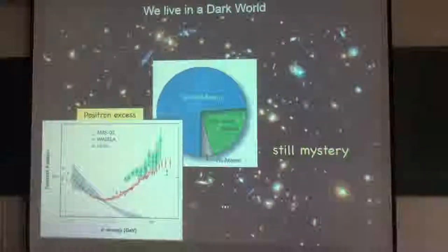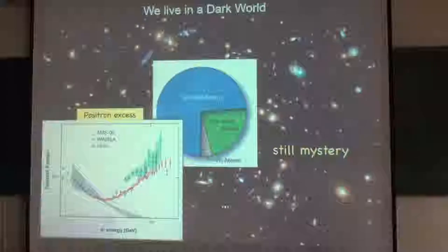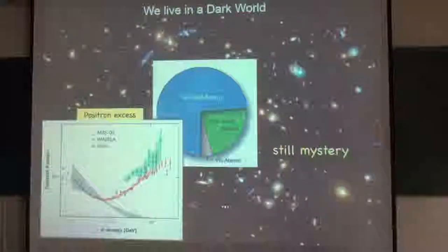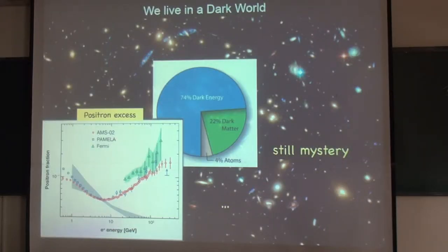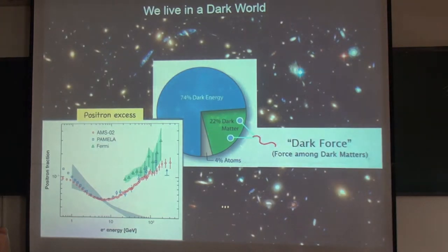But there are still some astrophysical data that cannot be explained by this simple picture of dark energy plus dark matter. Among them is the positron excess. This picture shows three different satellite measurements of the positron: Fermi, PAMELA, and AMS-02. The details differ from each other, but they consistently indicate there are more positrons than theoretical estimation. This suggests we're missing something in our picture. That's why the dark force was introduced. The dark force is the force among dark matter, and it can make dark matter physics much more dynamic. With the dark force, one can address various puzzles including the positron excess.